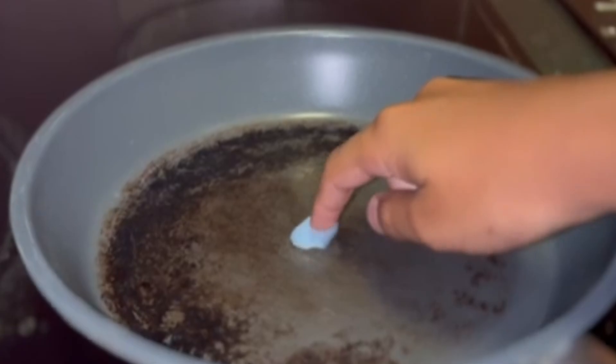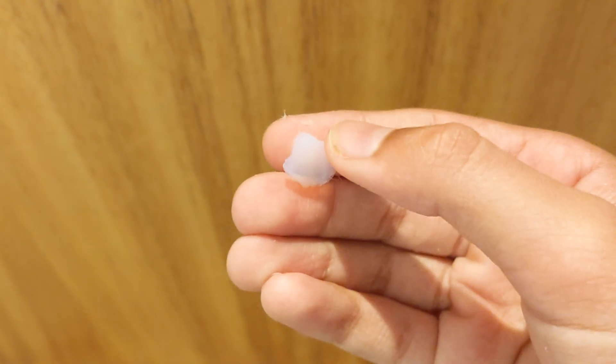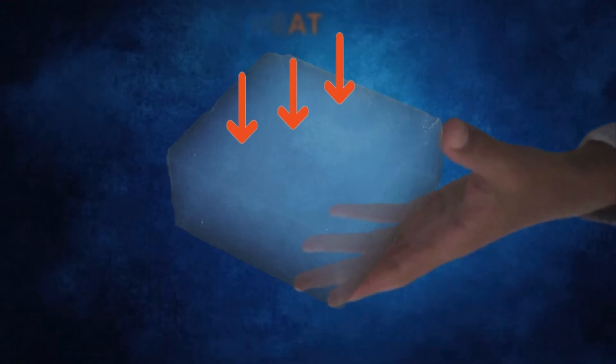It seems strange that such a transparent material is good at blocking the heat. But it is thanks to this effect, called the Knudsen effect.